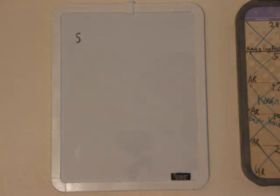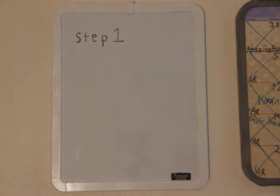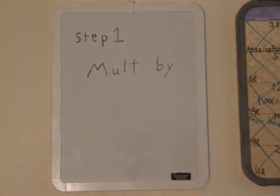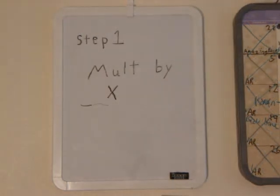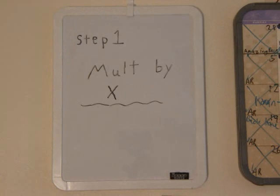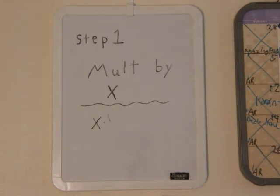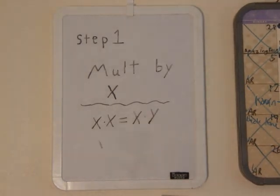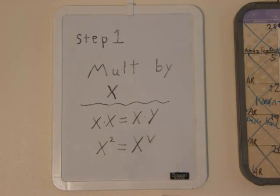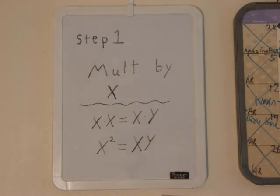Step 1 is to multiply each side of the equation by x. When we do that, we have x times x equals x times y. x times x will give you x squared, and x times y stays the same.